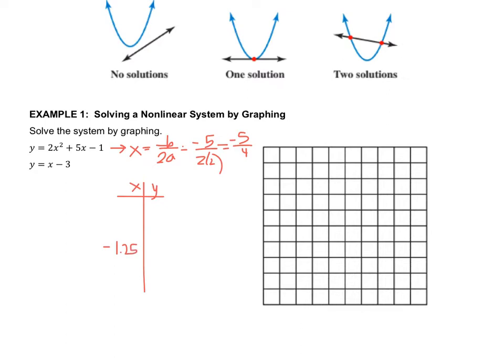So it doesn't have to be evenly spaced, but we want 2 above and 2 below. So let's see, so let's be negative 2, negative 3, and then negative 1 and 0.